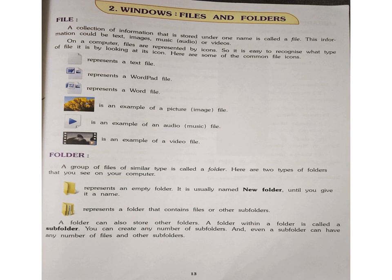Here are two types of folders that you see on your computer. The first one represents an empty folder — it is usually named 'New Folder' until you give it a name. In the second image, you can see a folder that contains files or other subfolders. A folder can also store other folders. A folder within a folder is called a subfolder.